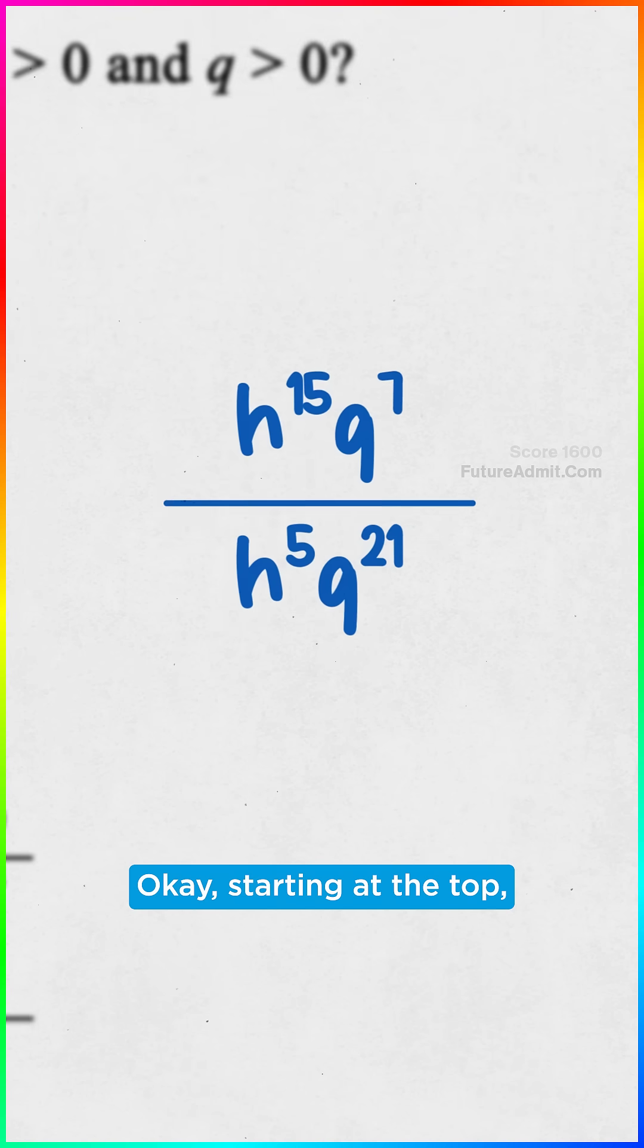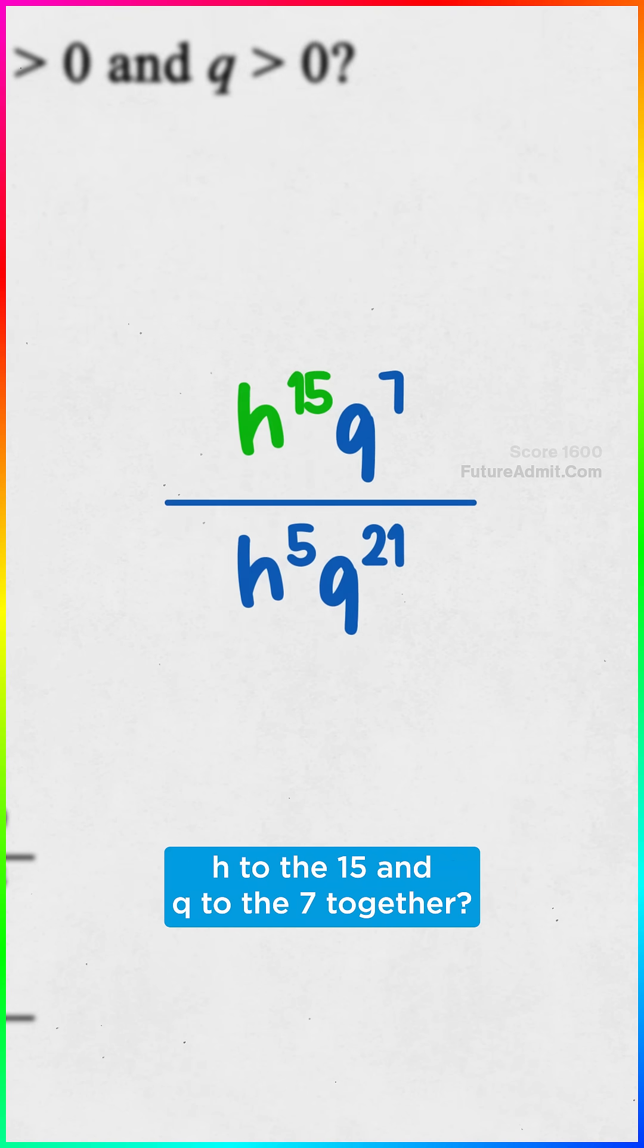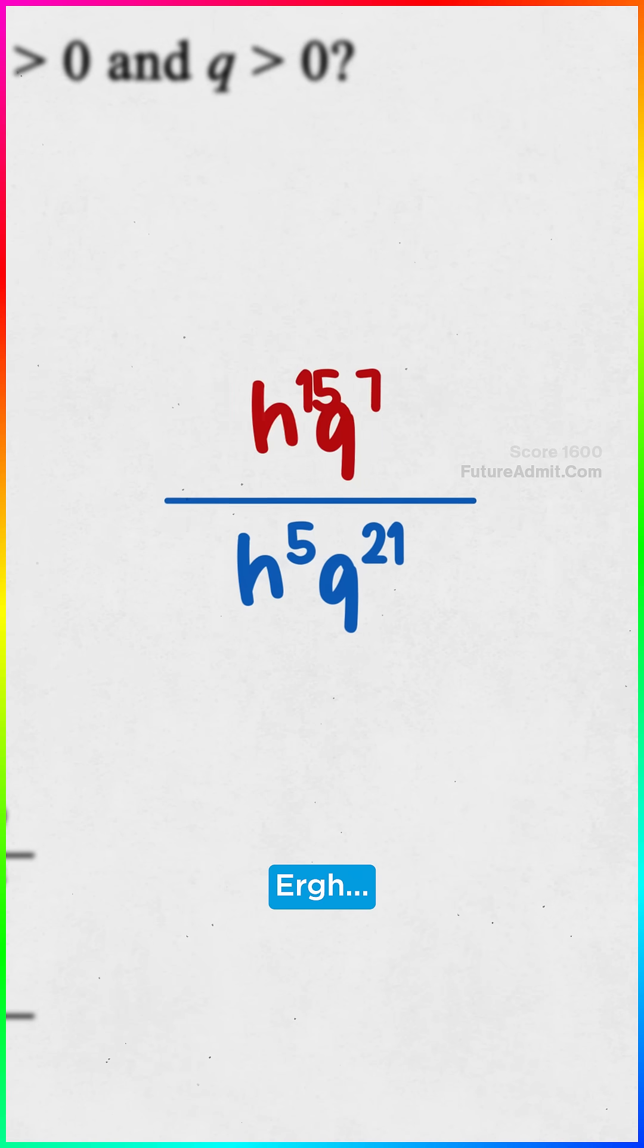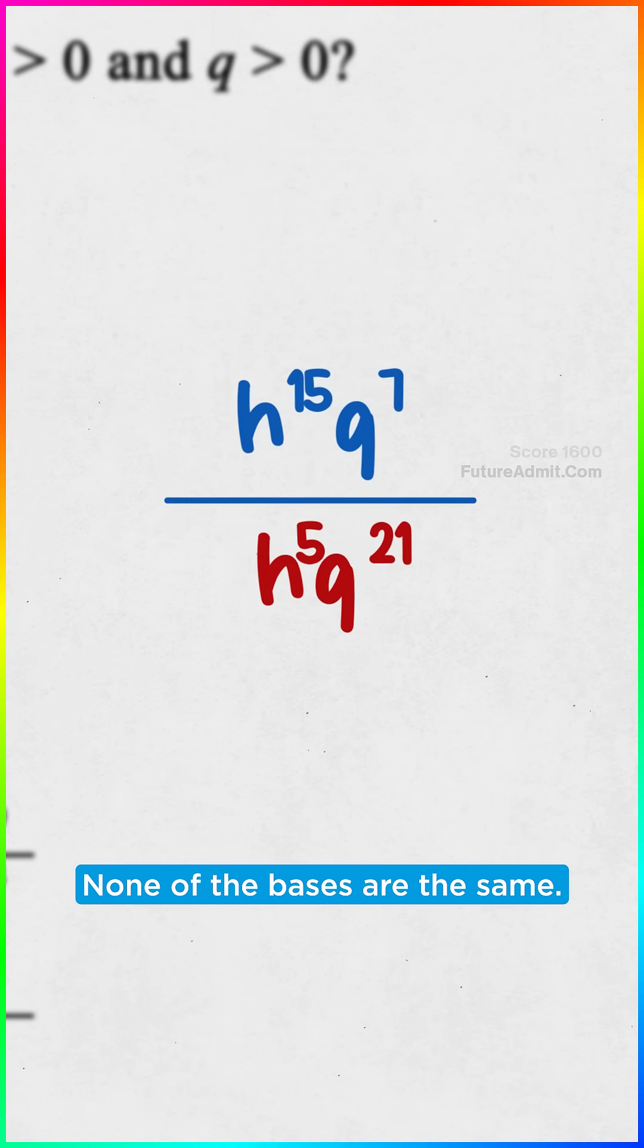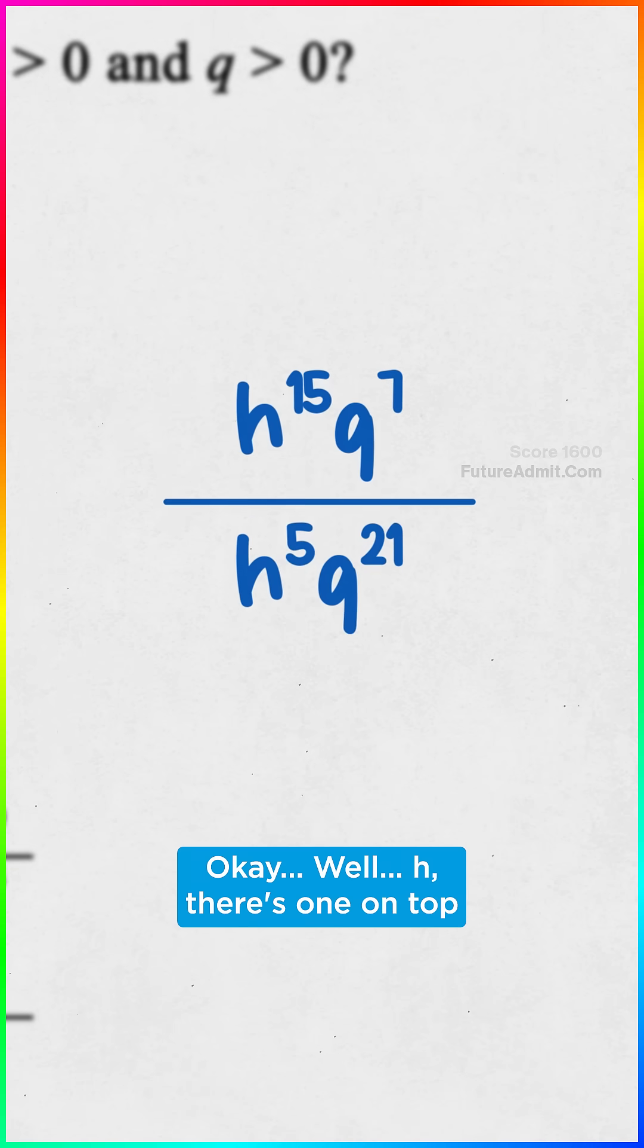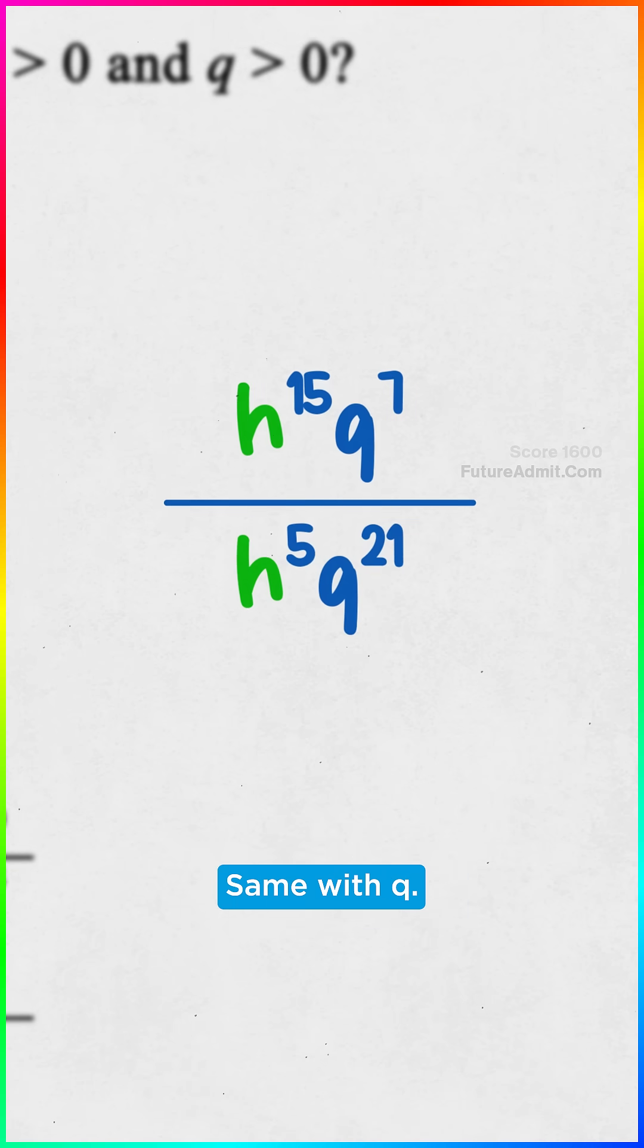Okay, starting at the top. Can we smash h to the 15 and q to the 7 together? Not how math works. What about the bottom? Nope, none of the bases are the same. Okay, well, h - there's one on top and one on the bottom. Same with q.